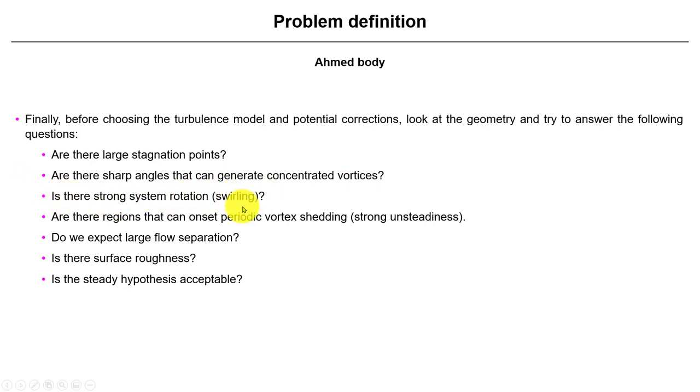Is there strong system rotation, swirling effects that you might need to resolve, meaning that you will need to use a more sophisticated model to take into account the anisotropic behavior or nature of the flow? Are there regions that can shed periodic vortex shedding? Remember, we go back to one of the first tutorials, the cylinder that we have done with the von Karman vortex street behind the cylinder. Are there regions here that might create, generate that? Because this is immediately an indication that you need to use an unsteady solver. Do you expect large flow separations? By looking at the geometry, you can also get an idea. Is there surface roughness? We talked about the surface roughness. And finally, is the steady hypothesis acceptable for you? Just try to answer these questions and you will get an idea how to choose your turbulence models, corrections, and set up your case.